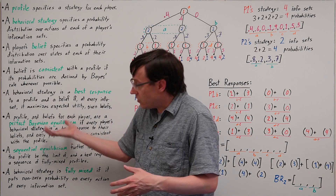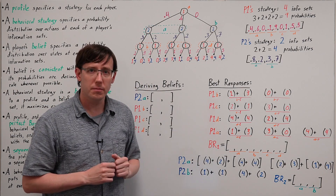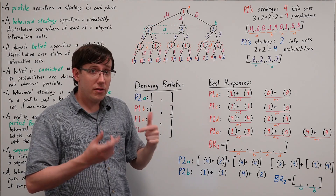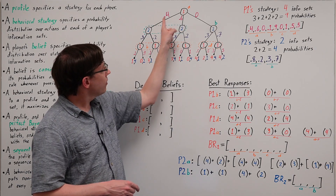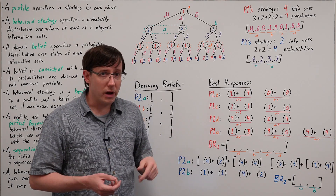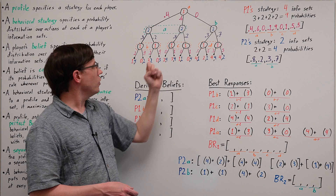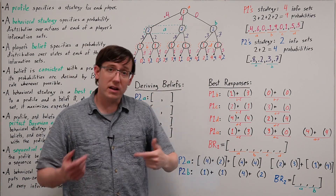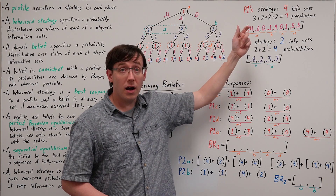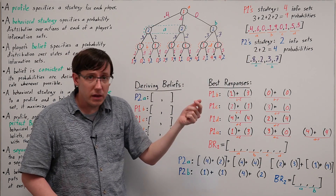So to make more sense of these equilibrium concepts, and to get some practice with computing beliefs and best responses, let's take a look at an example. In this game, player 1 has four information sets labeled A, B, C, and D. At those decision points, player 1 can pick between 3, 2, 2, and 2 actions, so a behavioral strategy for player 1 has to specify 9 probabilities — the probability for each of the 3 actions at node A, and for each of the 2 actions at the other information sets. An example of a behavioral strategy for player 1 specifies probabilities on their actions at node A, at information set B, and so on.